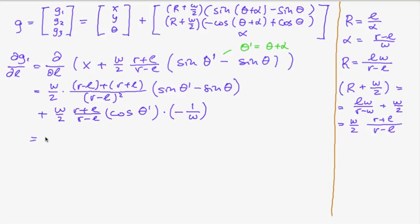So overall we obtain wr divided by r minus l squared times the sine of theta prime minus sin of theta minus this comes from here r plus l divided by 2 r minus l times the cosine of theta prime. So this is our partial derivative of the first component of g with respect to l. And we will have to do six of those. Let me just write down all those for you.